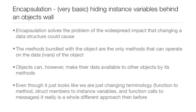Now encapsulation — a very basic definition — is hiding instance variables behind an object's wall. Encapsulation solves the problem of the widespread impact that changing a data structure could cause, because everything was spread throughout the code. The methods bundled with an object are the only methods that can operate on the data — the IVARs — of that object. Objects can, however, make their data available to other objects through their methods, but only the object's own methods can actually operate on those IVARs.